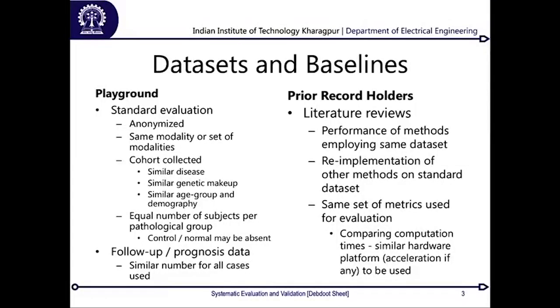Looking at the dataset part, we have very standard paradigms of evaluation. The first and foremost thing guaranteed for medical experiments is that the data needs to be anonymized. You cannot compromise on leaking out patient information at any point. Information means any entity by which the particular subject whose data you are using can be identified.